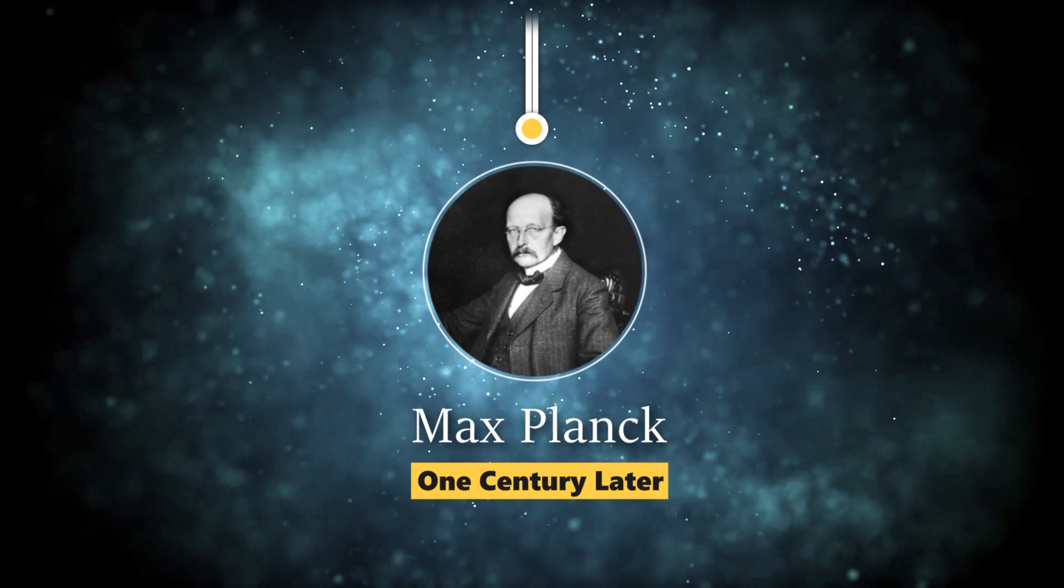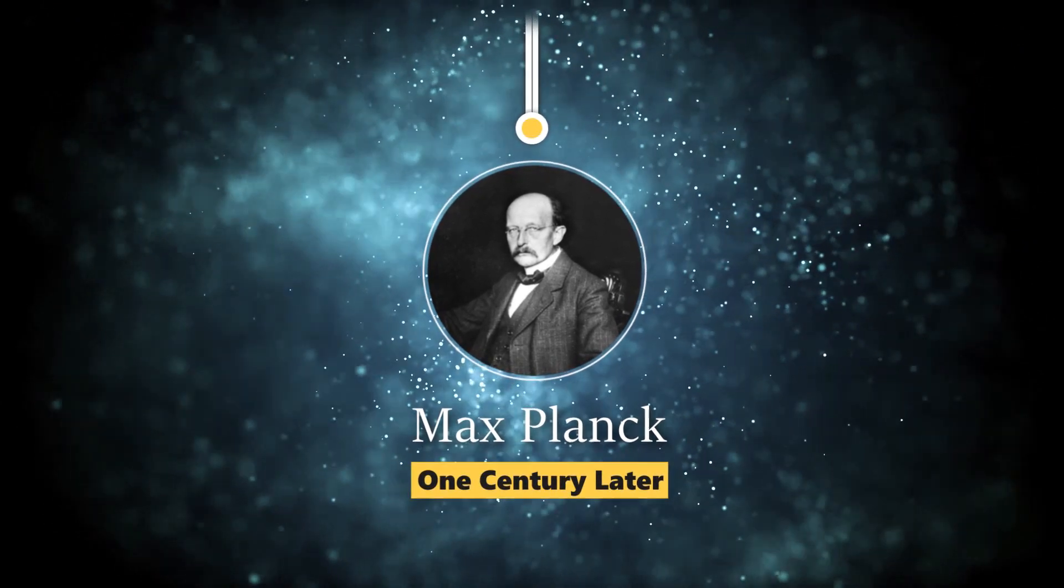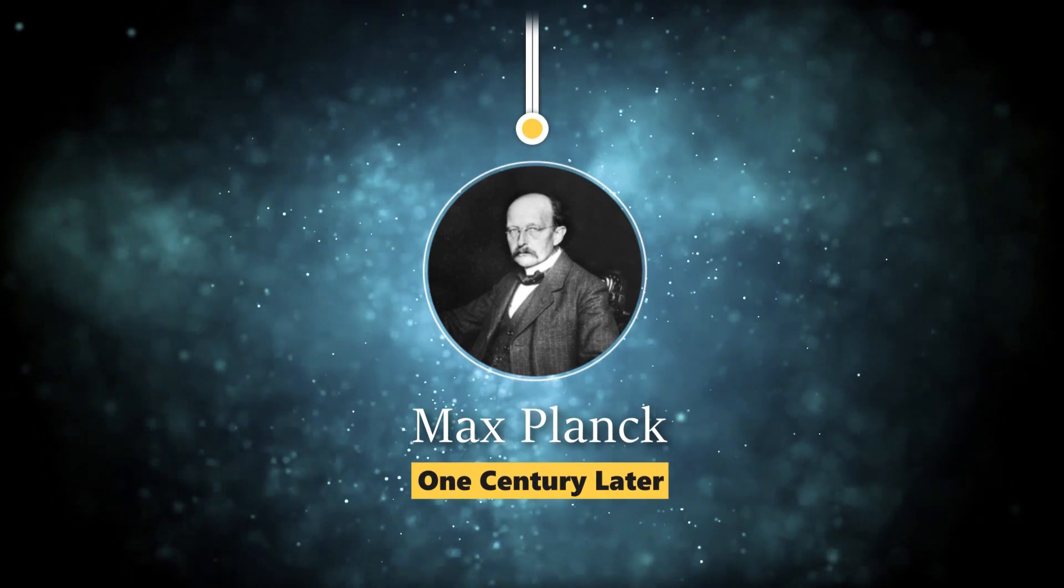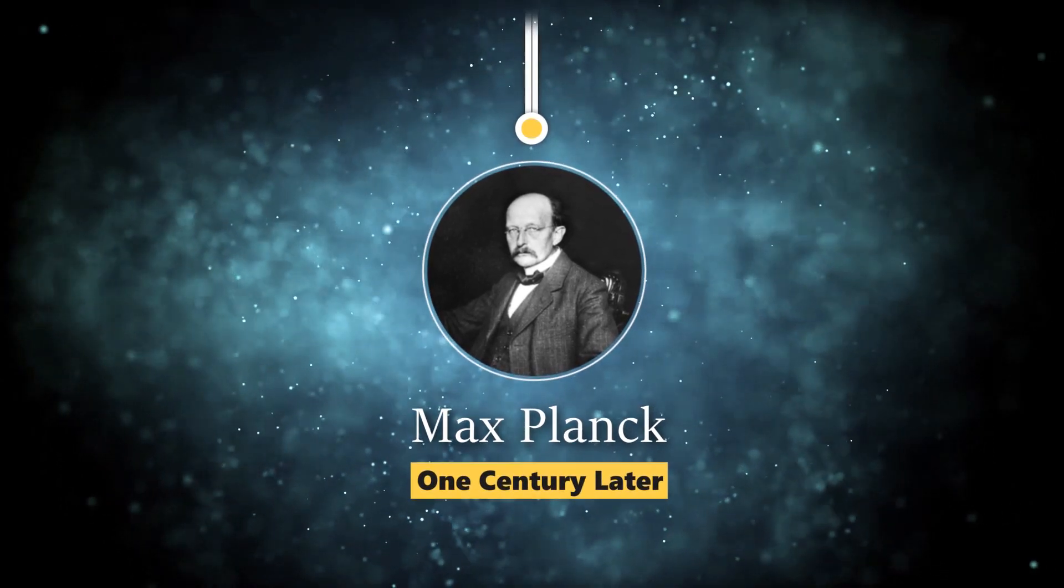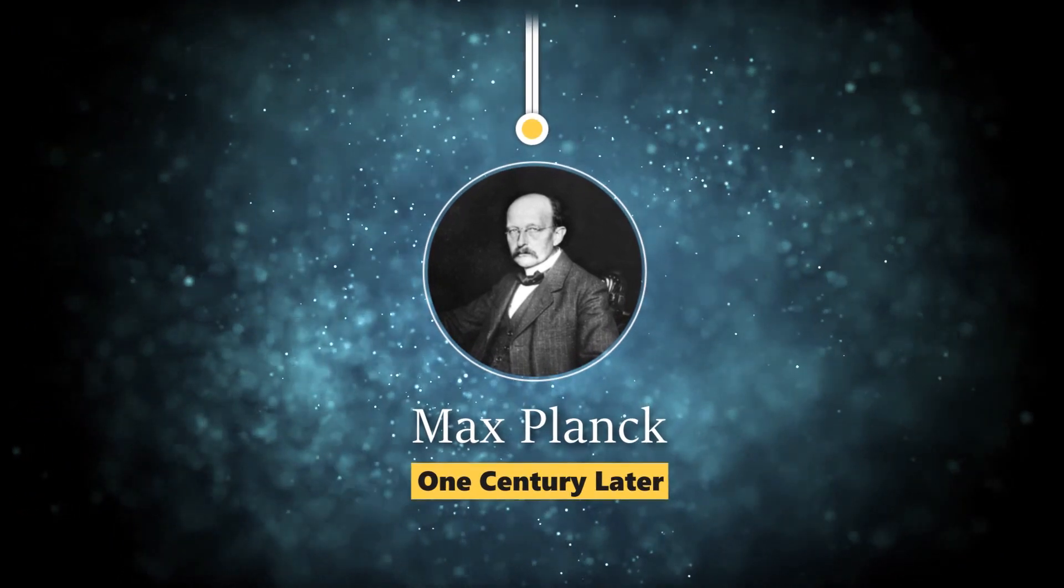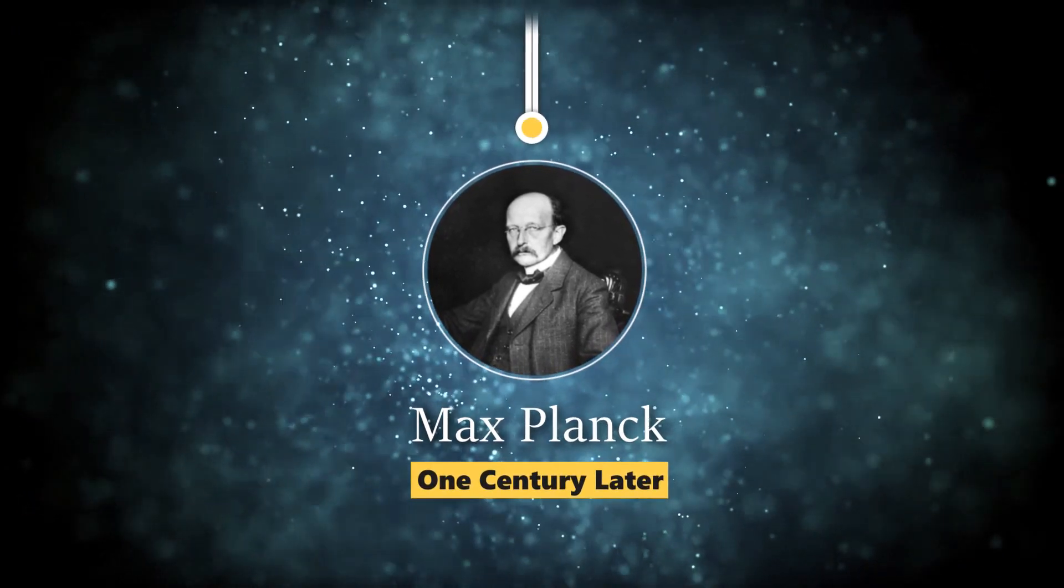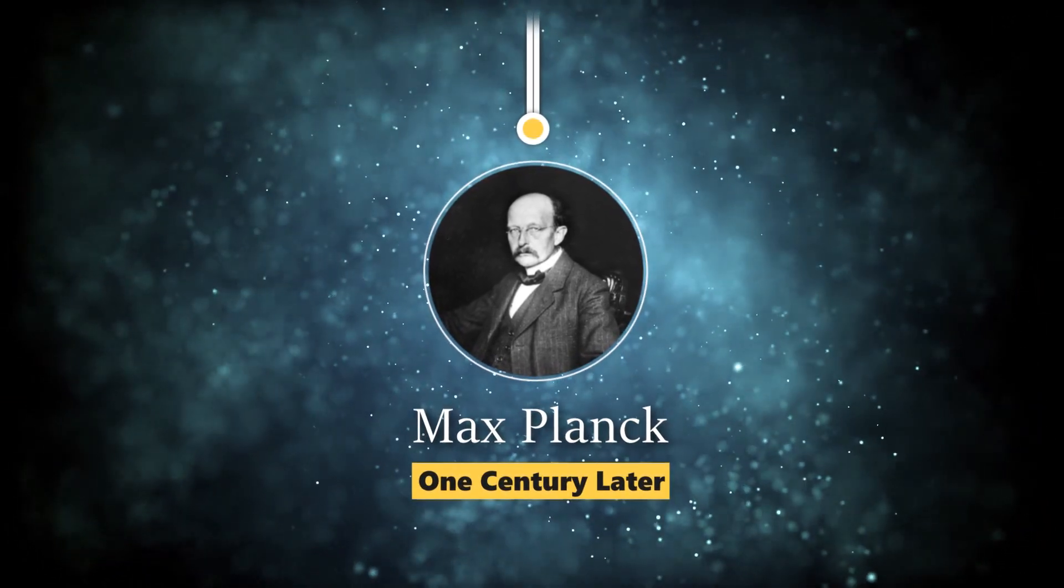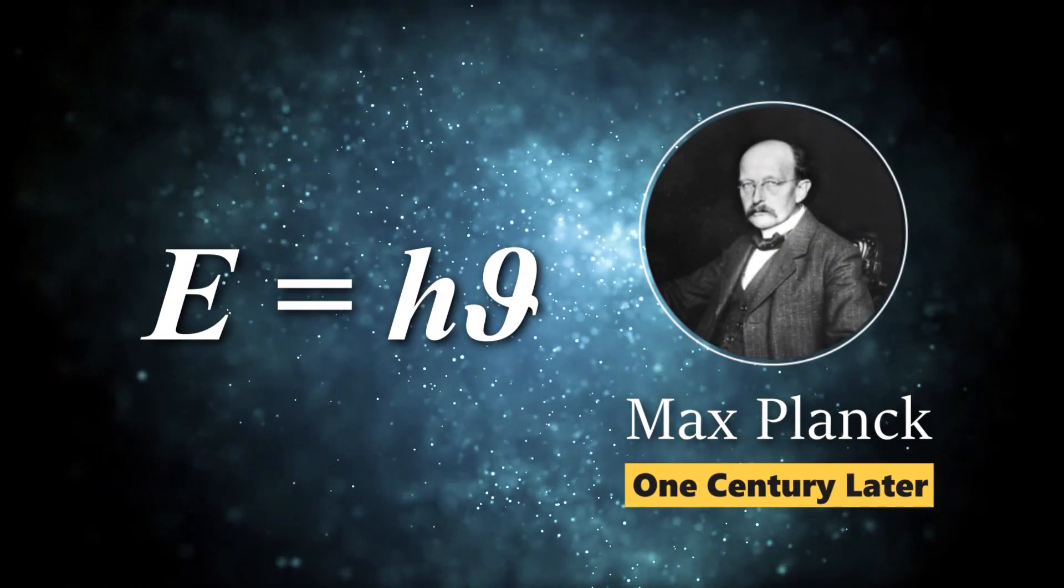One century later, Max Planck formulated his idea of the emission of light to solve the problem of thermal equilibrium of an absolutely black body. He found that the energy of light should be quanta, and his experiments show the energy formula of each packet, which called photon, is h nu.